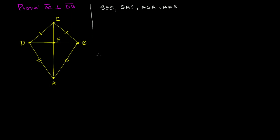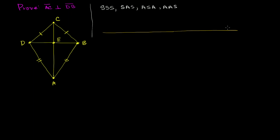I'm going to do this as what we call a two-column proof. You don't have to use a two-column proof, but this is what you normally see in an introductory geometry class. The basic idea is that you make a statement and give the reason for your statement. We'll have two columns — one for the statement and one for the reason.